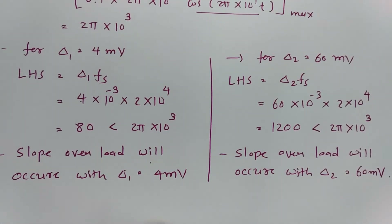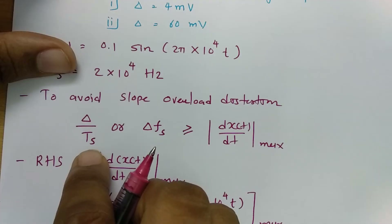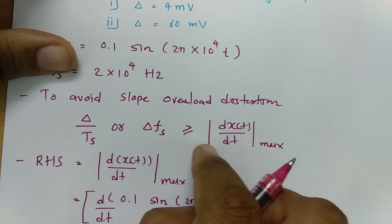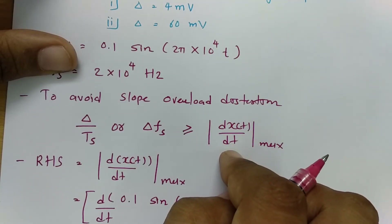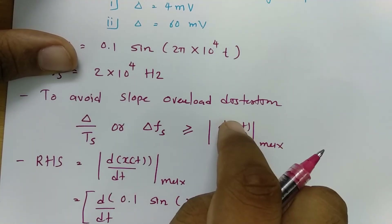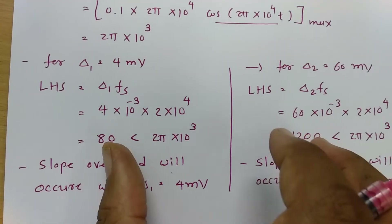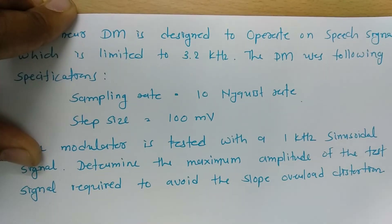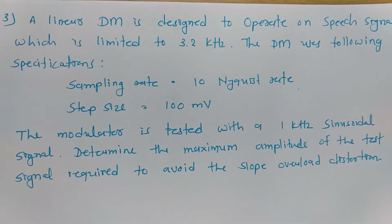In both cases slope overload occurs. The key condition to understand is: to avoid slope overload, delta / Ts (or delta × fs) must be greater than the maximum rate of change of the signal with respect to time. We have verified this for both cases. Let us move on to one more problem for a clearer understanding of delta modulation problems.